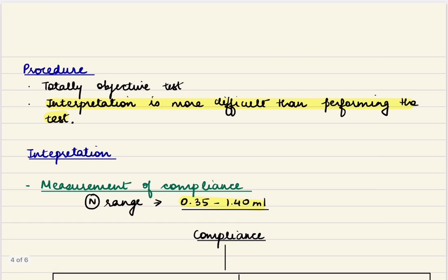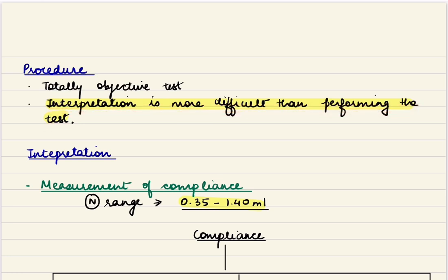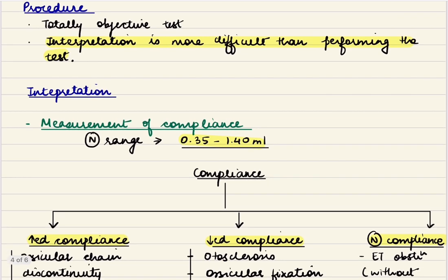Moving further — what is the procedure? This is a totally objective test, so the interpretation is more difficult than performing the test. This is in contrast to pure tone audiometry, where it is difficult to perform but interpretation is easier. We place the probe in the external auditory canal, ensure it is an air-sealed cavity, and it takes only 2 to 3 minutes. Only basic cooperation from the patient is required — we ask them not to swallow or breathe very hard during the test. For interpretation, we measure the compliance. The normal range is believed to be 0.35 to 1.4 milliliters, though this is variable and not a hard and fast range.